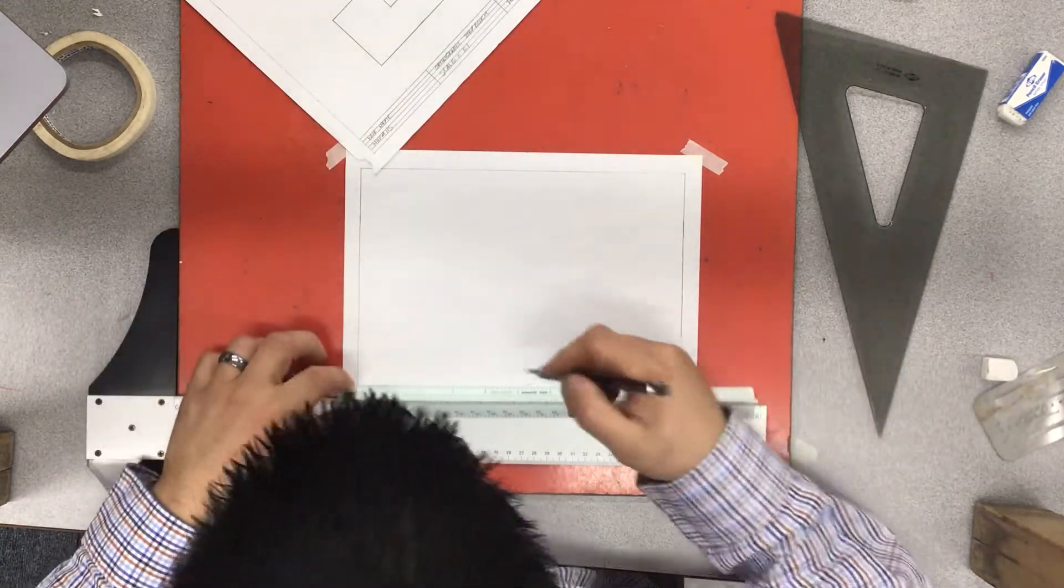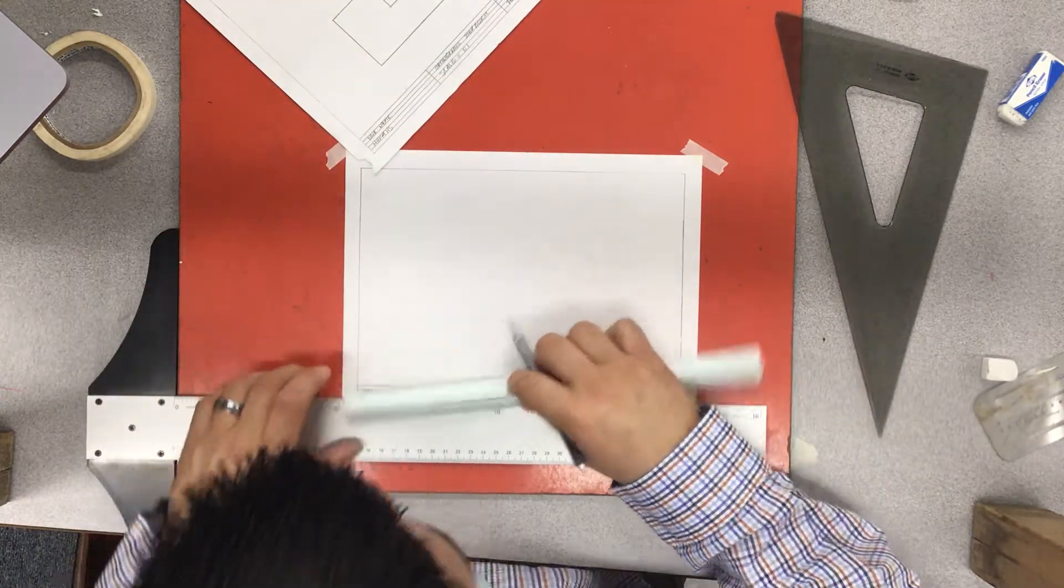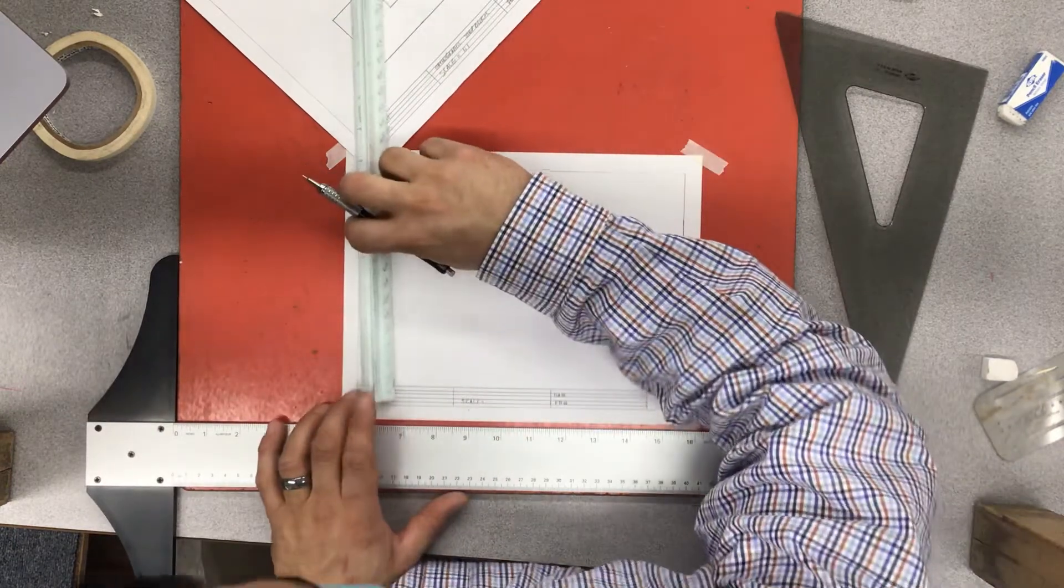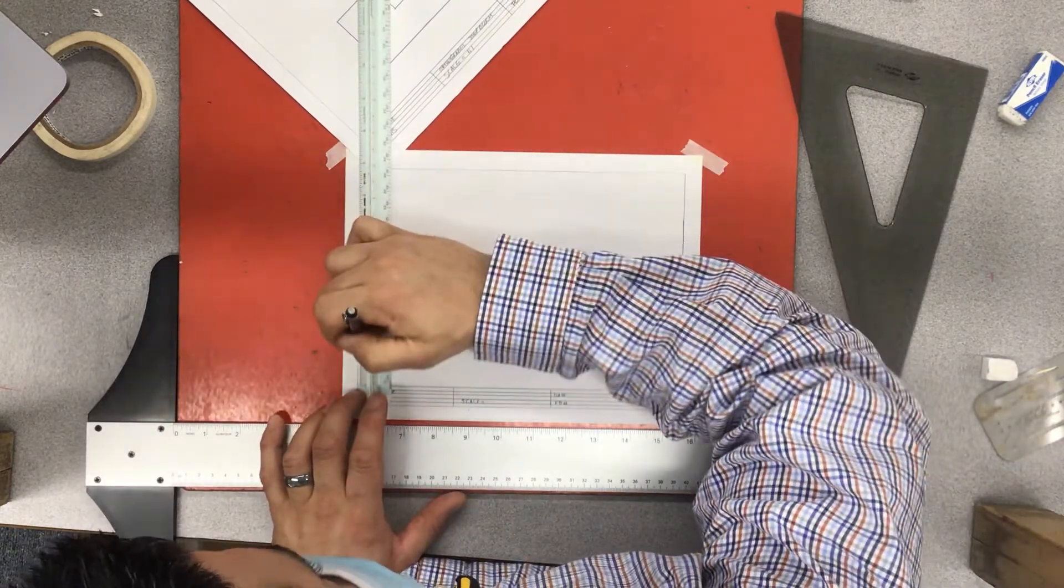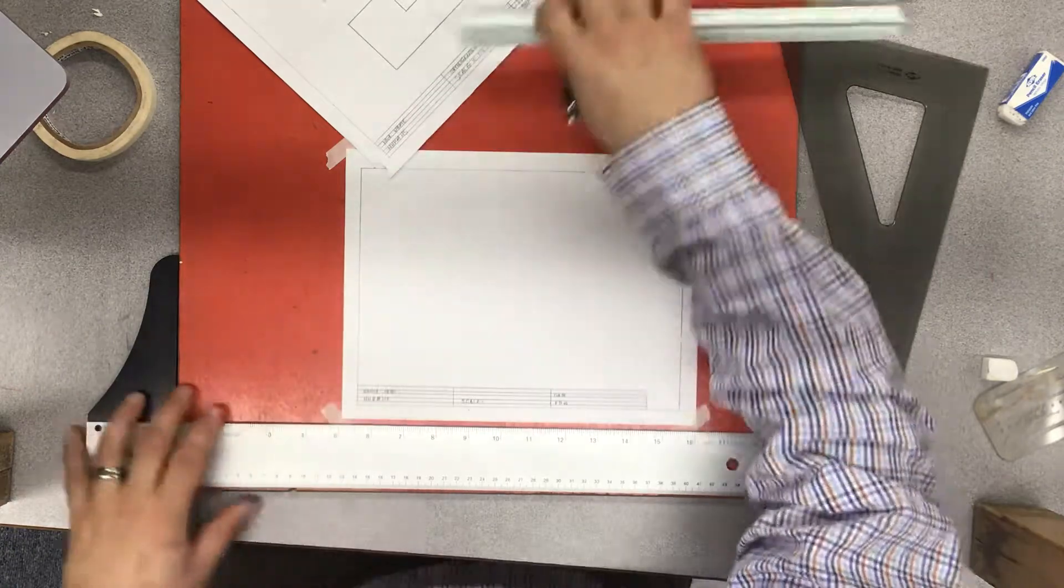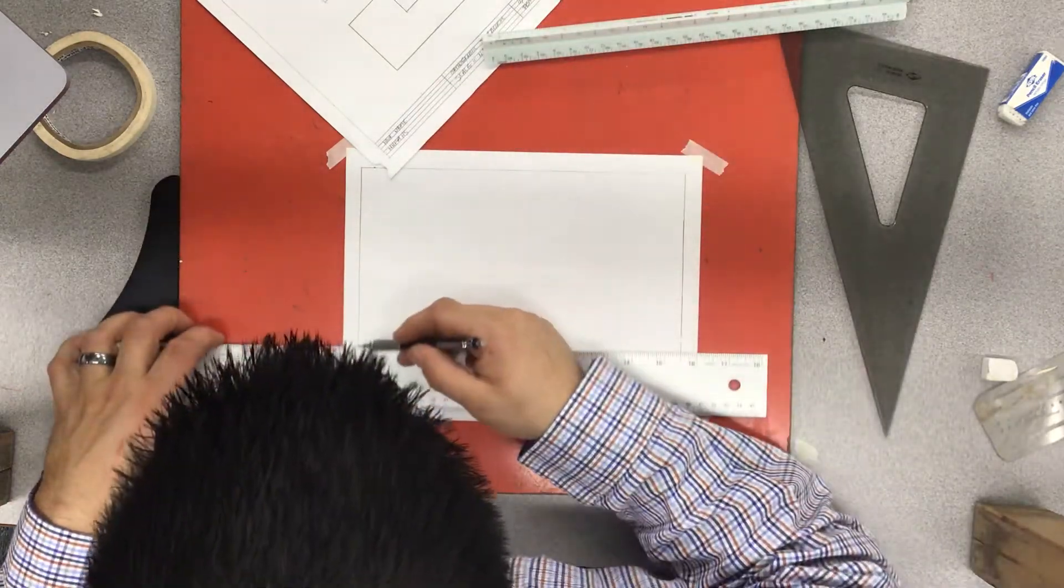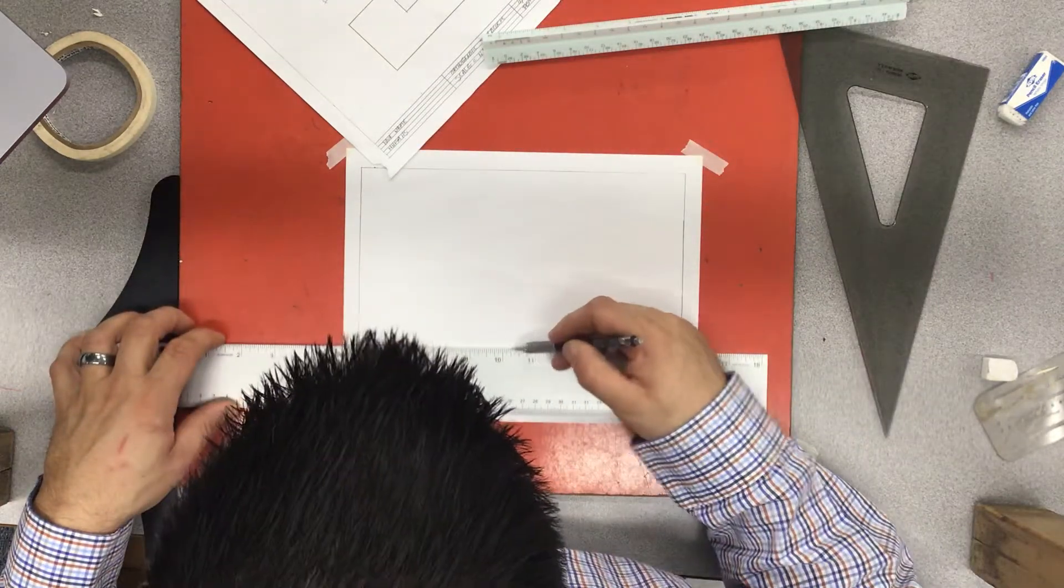5 inches over to your right, inch and a quarter up. I like to usually measure right on the edges so I know where they need to be. Take this dot here, make a little cross here.